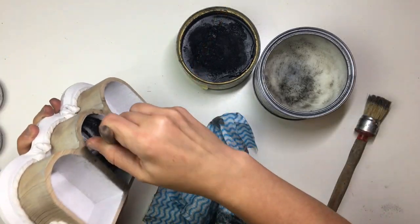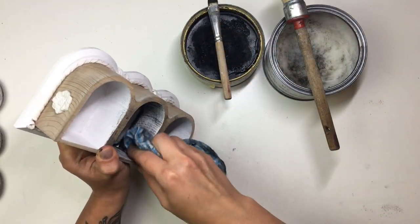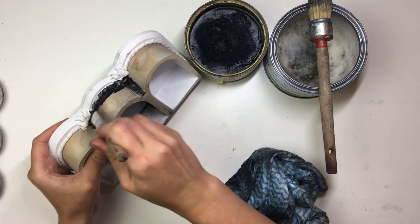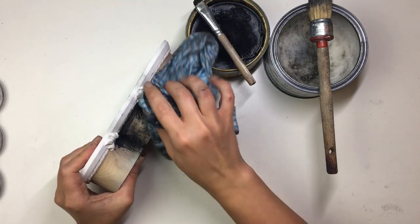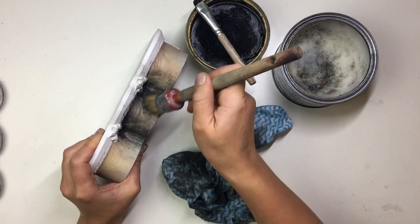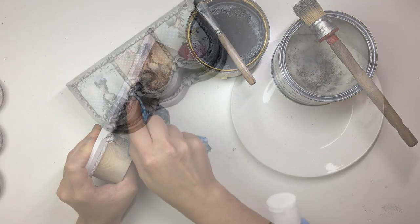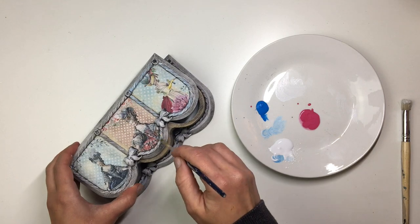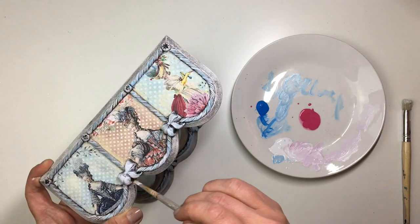And so I did that all over the jewelry box. Once I was happy with the amount of aging that I did, I took some blue, white and pink paints, mixed them together a little bit and using a dry brushing technique, applied a little bit of blue and pink over the molds.